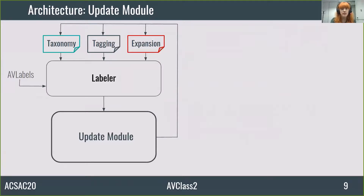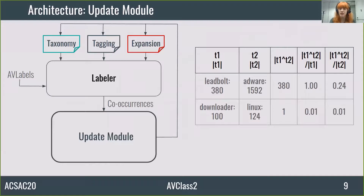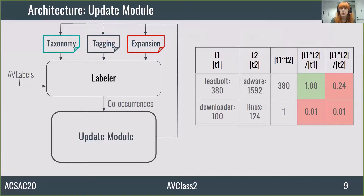For this reason, we created a module which updates the taxonomy and the rules automatically. First of all, it receives a list of co-occurrences. Those co-occurrences identify how many times tags appear with all other tags. The table on the right shows that whenever Leadbolt is on the label, AdWord appears too. This means there is a strong relationship. Keep in mind that the order is important — AdWord appears many times without Leadbolt, meaning the relationship walks just one way. In the case of Downloader and Linux, both appear over 100 times but just once together — a very weak relationship.